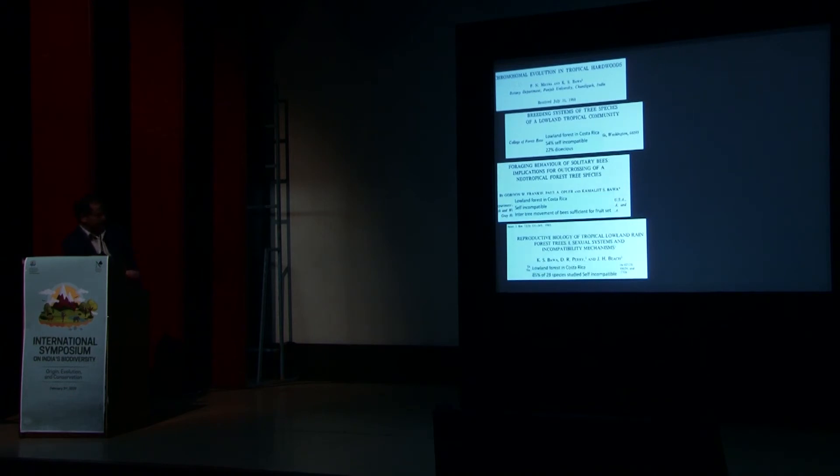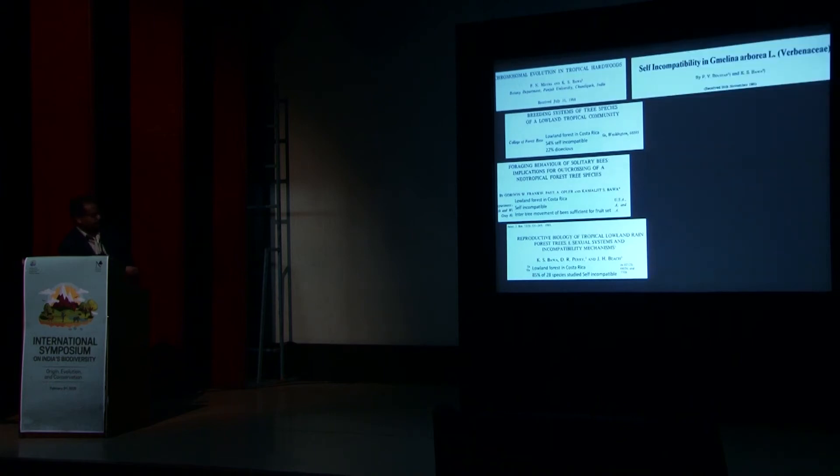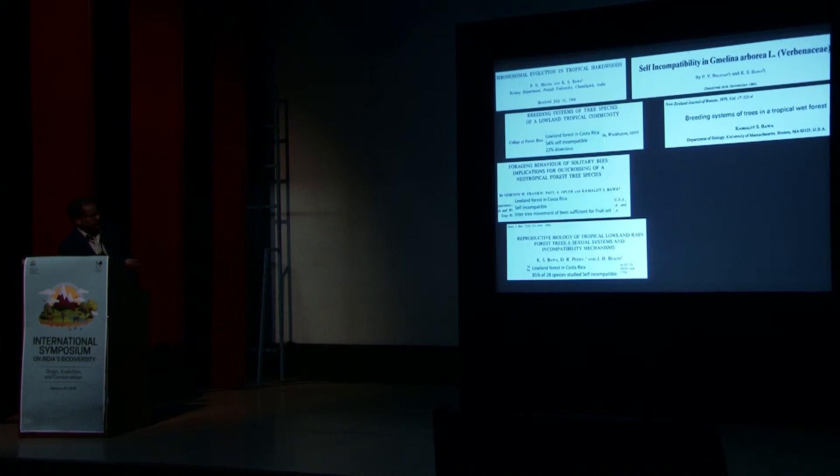And then another study, so these are all random collections. He had a lot more papers. So in this one, he showed that lowland forest in Costa Rica, 85 percent of the 28 species he studied, they were self-incompatible. And this again, he showed more self-incompatibility in other plants. And then another study, breeding systems of trees in tropical wet forest. Again, lowland wet forest in Costa Rica, about 88 percent of the 25 species studied, they were self-incompatible.